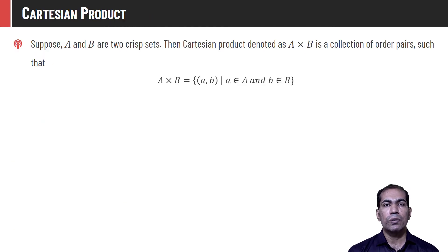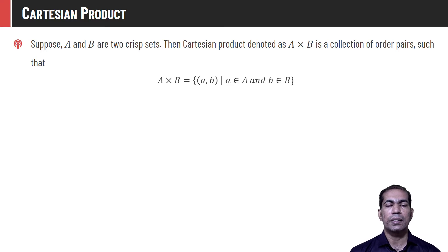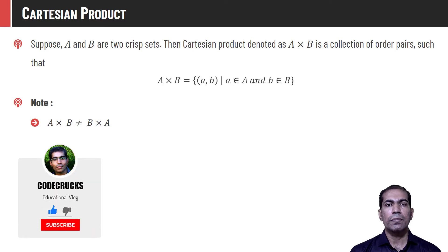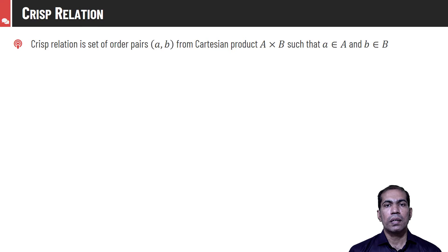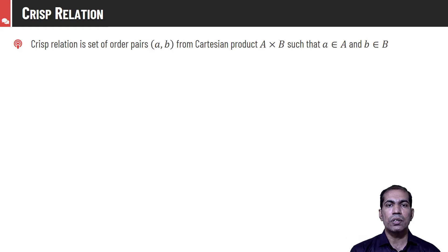The Cartesian product of any two sets is defined as a tuple pair where the first element small a is derived from the crisp set capital A and the second element small b is derived from crisp set capital B. As it is a collection of ordered pairs, A Cartesian product B is not the same as B Cartesian product A. The cardinality of this Cartesian product is the same as the multiplication of cardinality of individual sets, that is |A×B| = |A| × |B|. Crisp relations are a subset of this bigger Cartesian product set, or we can say that the Cartesian product will act as a universe for relations.